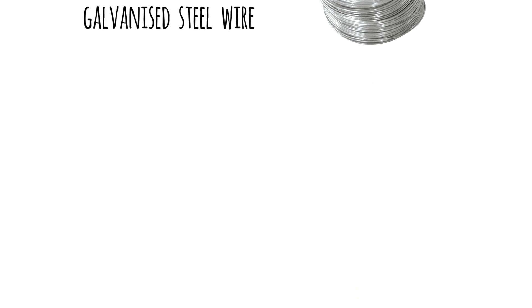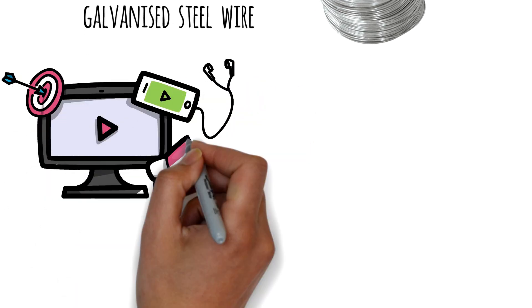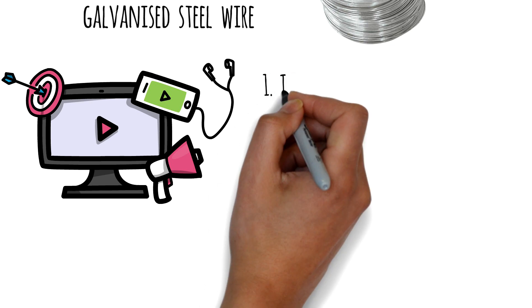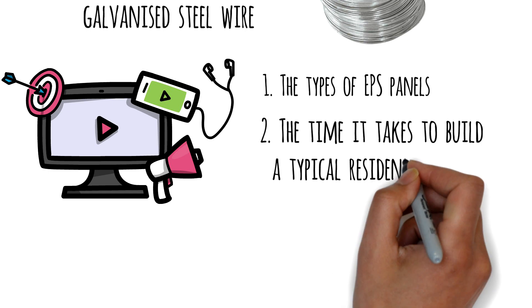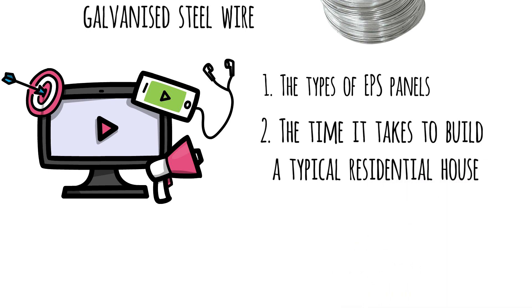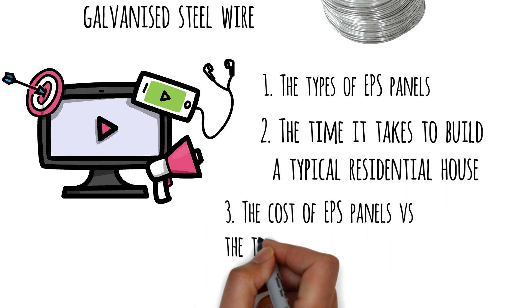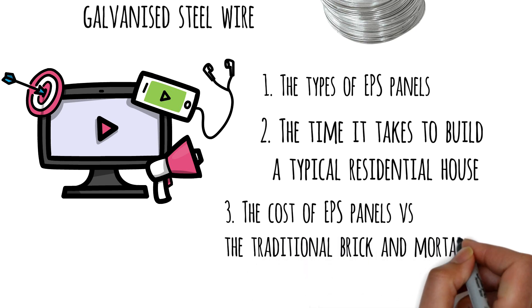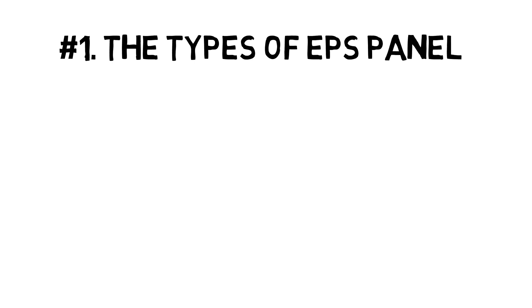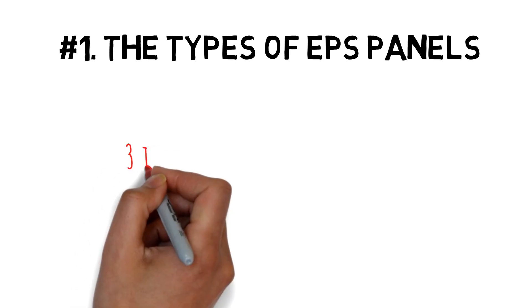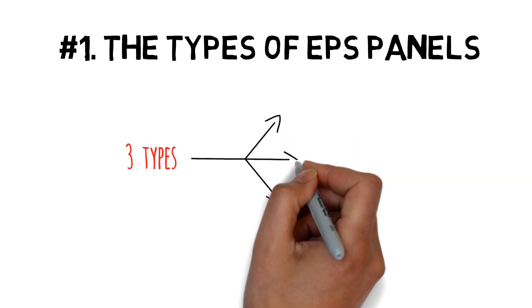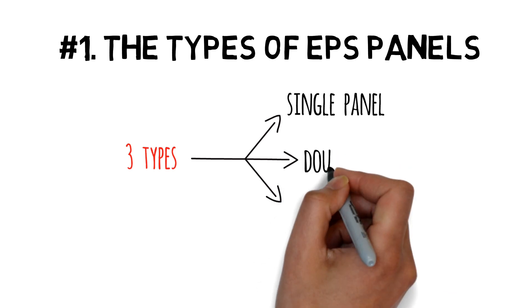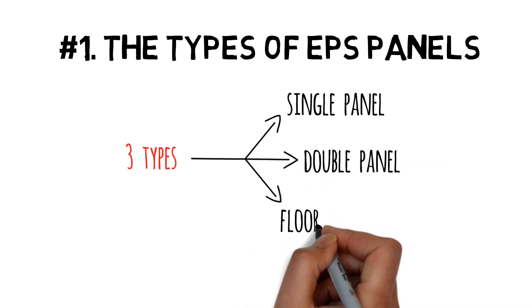For the purposes of this video, we look at the following three parameters. The first parameter is the types of EPS panels. There are three types used in the construction of buildings: the single panel, the double panel, and the floor or roof panel.